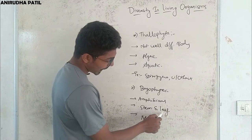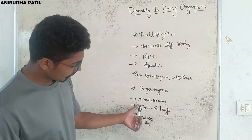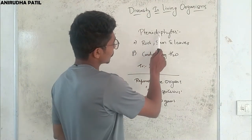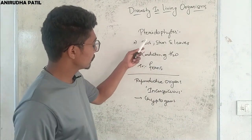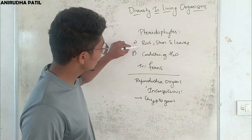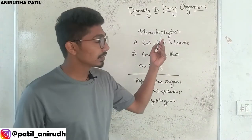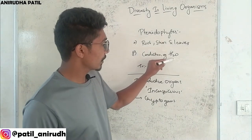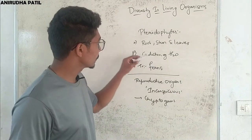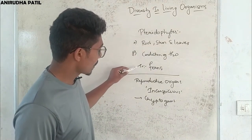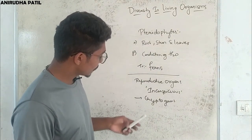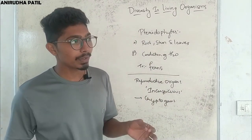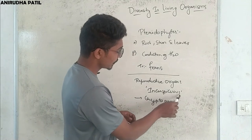Next are Bryophytes, known as the amphibians of the plant kingdom. The body is divided into stem and leaf. Examples are moss and Funaria. Next are Pteridophytes, where the body is differentiated as root, stem, and leaves. Unlike the previous two groups, they have conduction tissues to conduct water and mineral salts. An example is ferns.